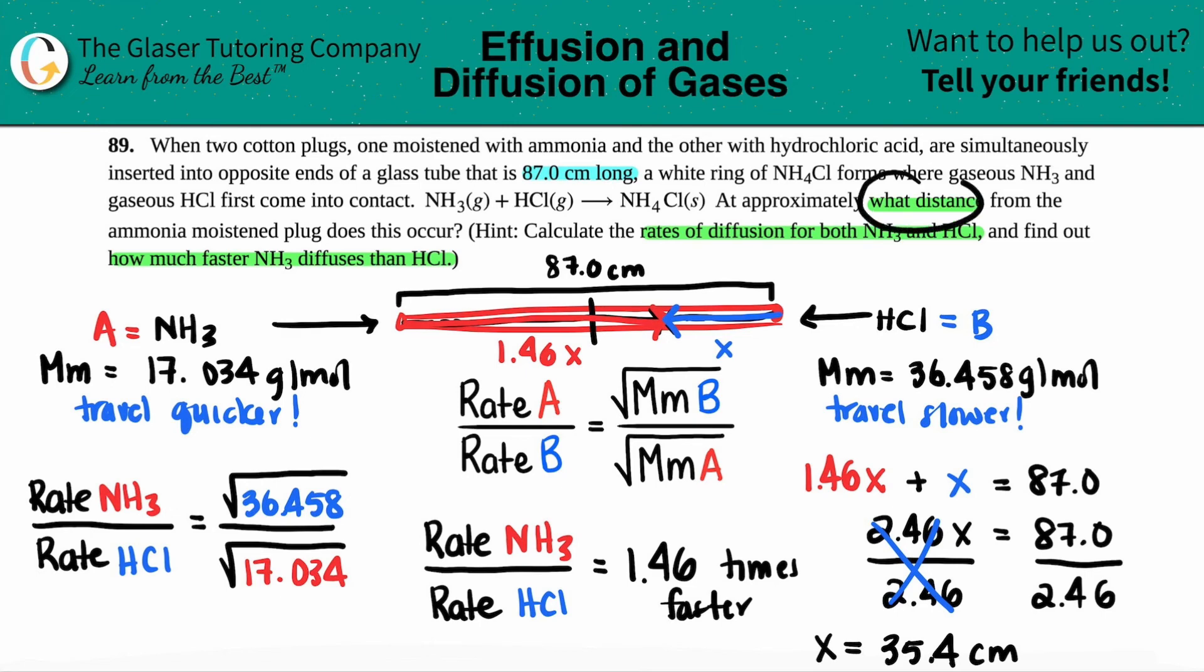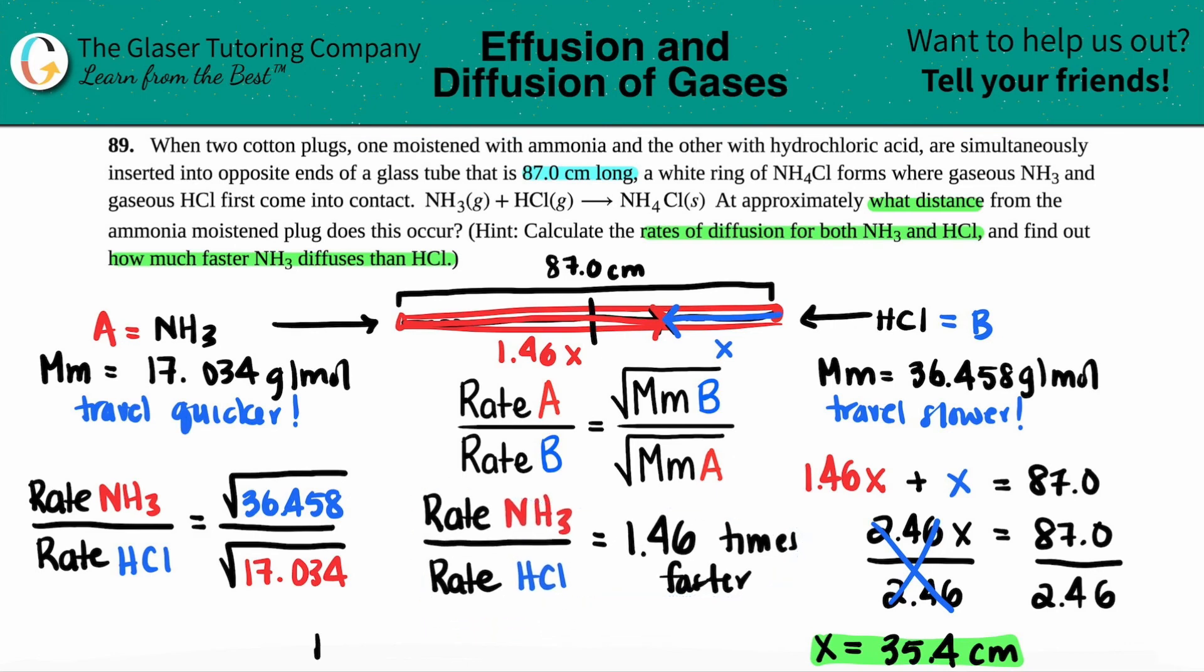But here's the thing. They said, what distance from the ammonia? We just found out what x was. If we go back to our drawing, x was from the HCl. From the NH3, that was 1.46x. So what do I have to do with this number? I just have to times it by 1.46.